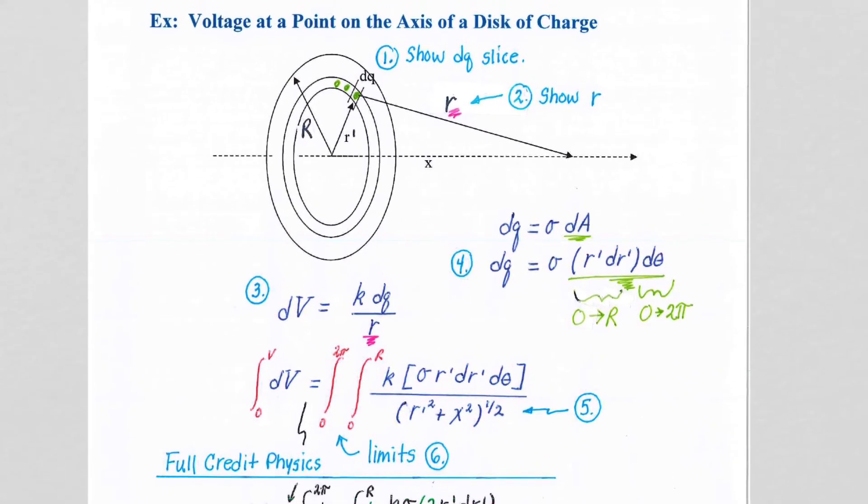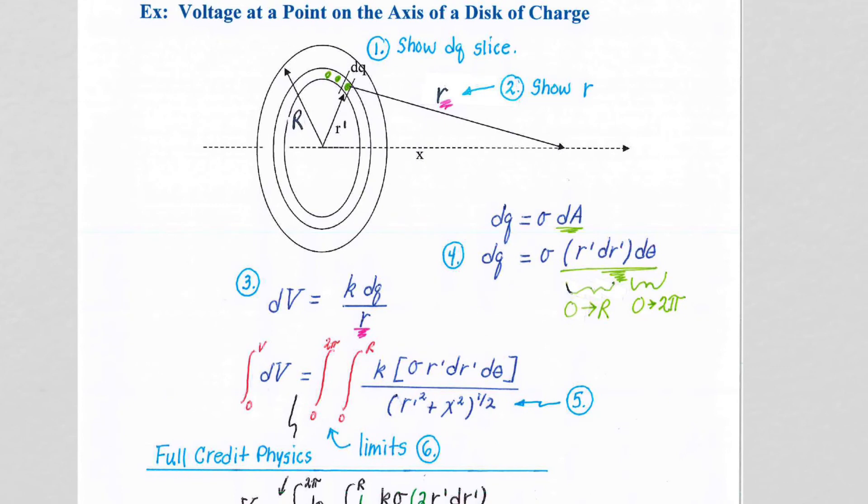Well, we're pretty much in shape. We've done most of the hard work. So I've numbered your rubric to get full physics credit. So make sure you put in the numbers I'm looking for. It doesn't have to be in the order that I show them, but you have to show me the dQ slice. You have to show me the r going to the point in space where you want to calculate the voltage. You have to show me your dQ substitution that you are doing. So that dQ is this dQ, is this bracketed term.